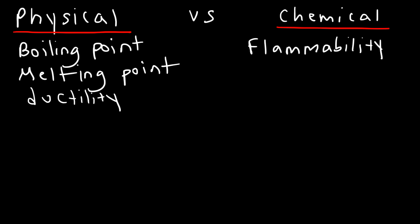Now, what about the word corrosive? If something is corrosive, are we describing a physical property or a chemical property? If I say acid is corrosive, would you define it as a physical or a chemical property? Corrosion has to do with a chemical reaction. Acid is corrosive because it can strip off electrons from metals. And whenever there's a chemical reaction, the characteristic that describes it is a chemical property. So, something that is corrosive — that's a chemical property of that substance.